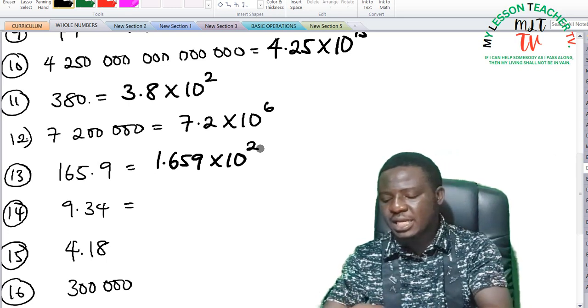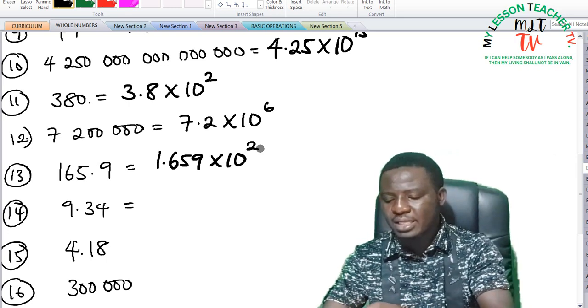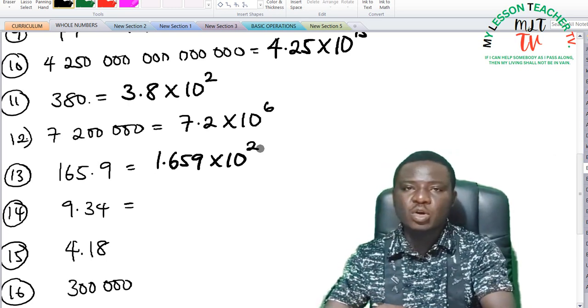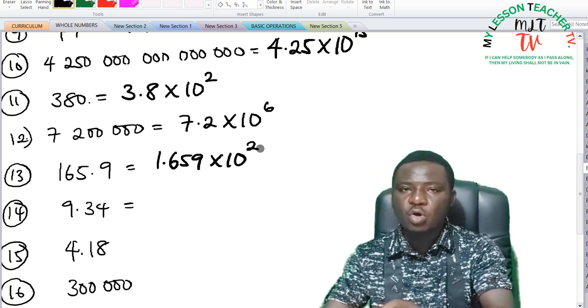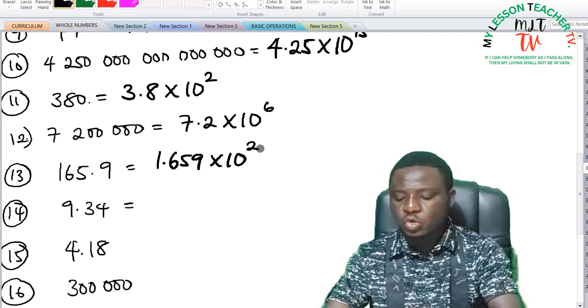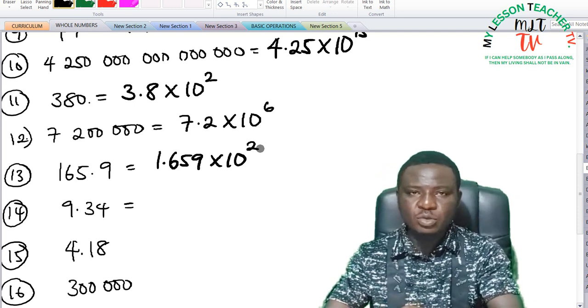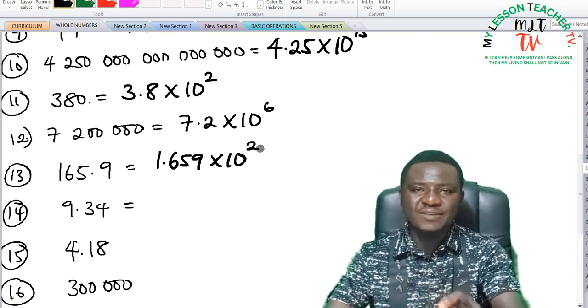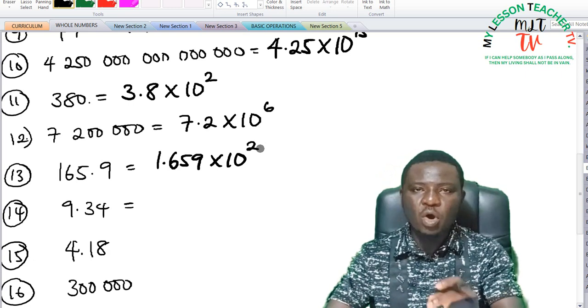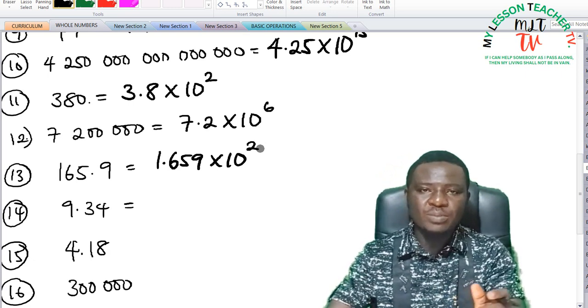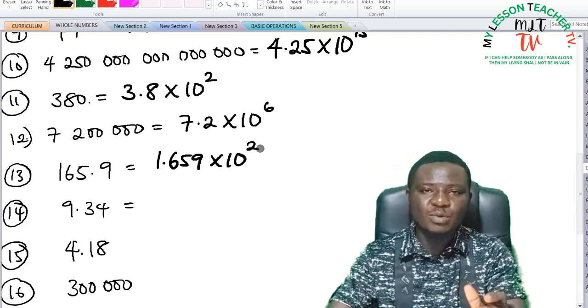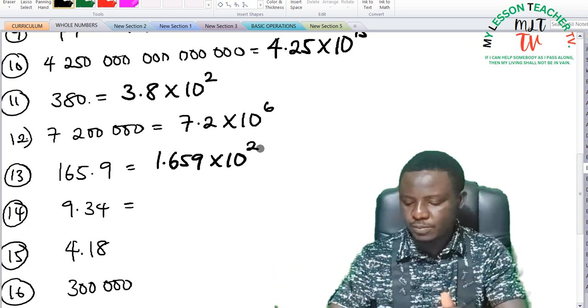If you observe question 13 and question 12, while writing question 13, I had to include all the digits, but in question 12, I had to omit all the zeros. So when you are dealing with standard forms, you have to take note of all the significant figures. I would say all numbers are significant except zero. Zero can only be significant if it falls in between two significant figures.